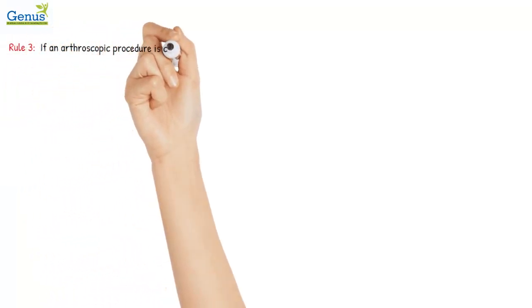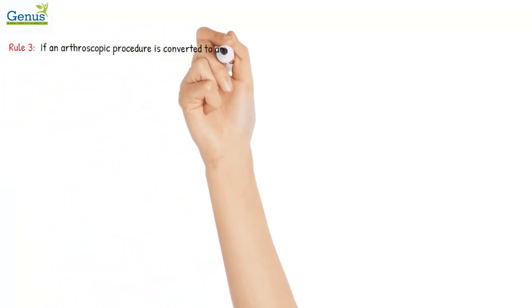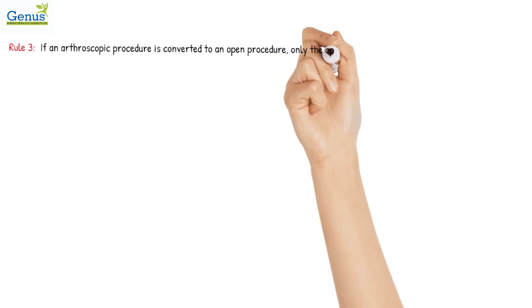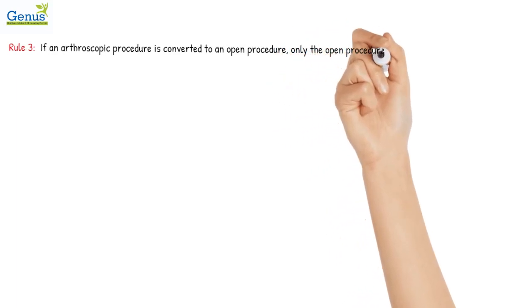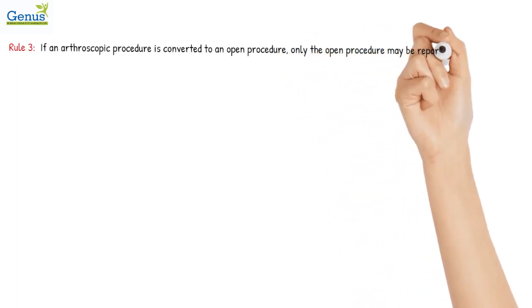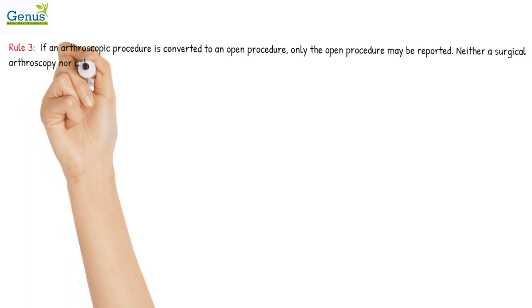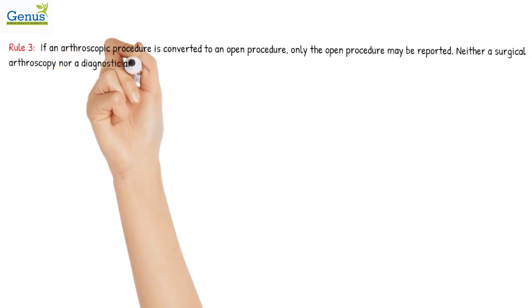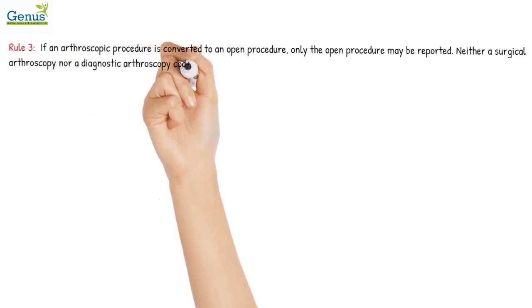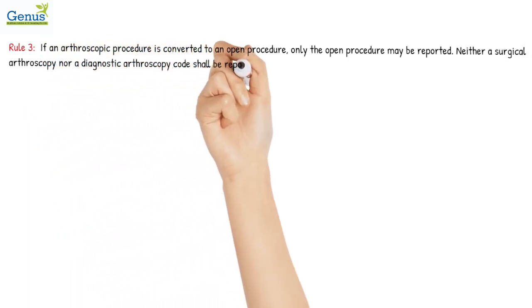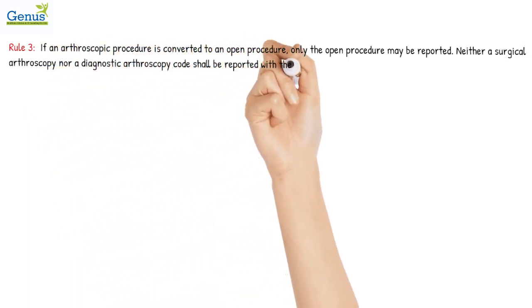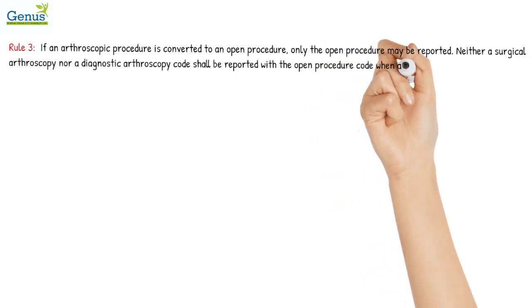Rule 3: If an arthroscopic procedure is converted to an open procedure, only the open procedure may be reported. Neither a surgical arthroscopy nor a diagnostic arthroscopy code shall be reported with the open procedure code when a surgical arthroscopic procedure is converted to an open procedure.